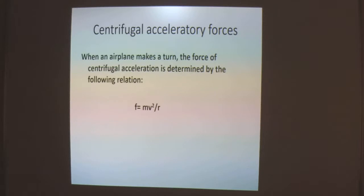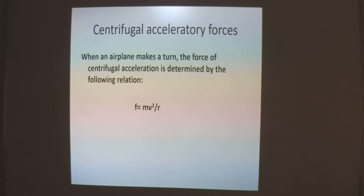First we will look at the centrifugal acceleratory force. When an airplane makes a turn, the force of centrifugal acceleration is determined by the relation: force equals m times v squared divided by r. This shows that the force of acceleration is directly proportional to the square of the velocity and directly proportional to the mass of the object.